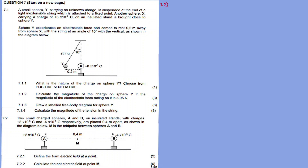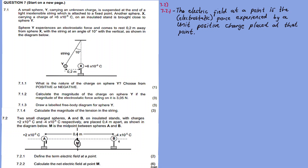7.2: Two small charged spheres A and B on insulated stands, with charges 2 and minus 4 respectively, are placed 0.4 metres apart as shown in the diagram below. M is the midpoint between spheres A and B. 7.2.1: Define the electric field at a point.